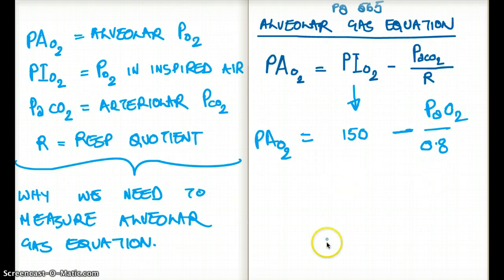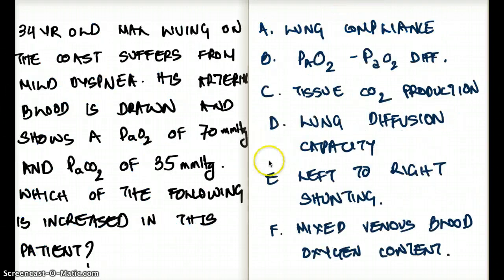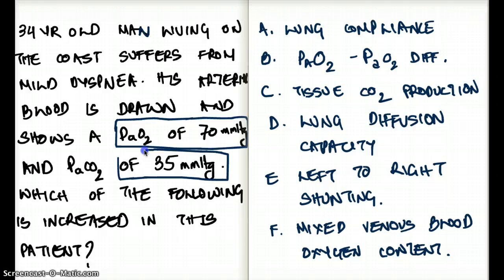So now let's quickly look into a question to see if we can relate it to a question. The question says that a 34-year-old man living on the coast suffers from mild dyspnea. His arterial blood is drawn and shows PaO2 is about 70 millimeter mercury, and PaCO2 was 35.